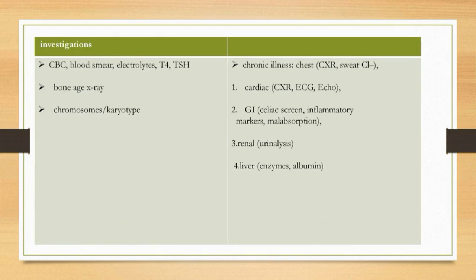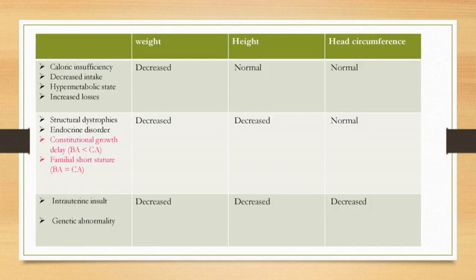In chronic illness: chest X-ray, sweat chloride test, cardiac chest X-ray, ECG, echo, GI celiac screen, inflammatory markers, malabsorption workup, renal urinalysis, liver enzymes, and albumin.